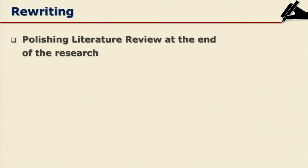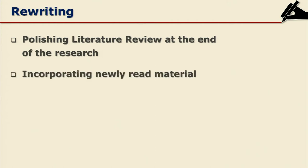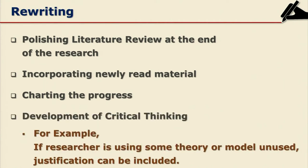Polishing the literature review at the end of your research enables you to incorporate newly read material. Here you also chart the progress and development of the topic with critical thinking. If you are using a theory or model, the justification needs to be included. For example, extending the earlier example on Education 1.0, 2.0, and 3.0 — at the end of research, the researcher can include Education 4.0 if she observes a conference on that topic and wishes to include this subtopic.